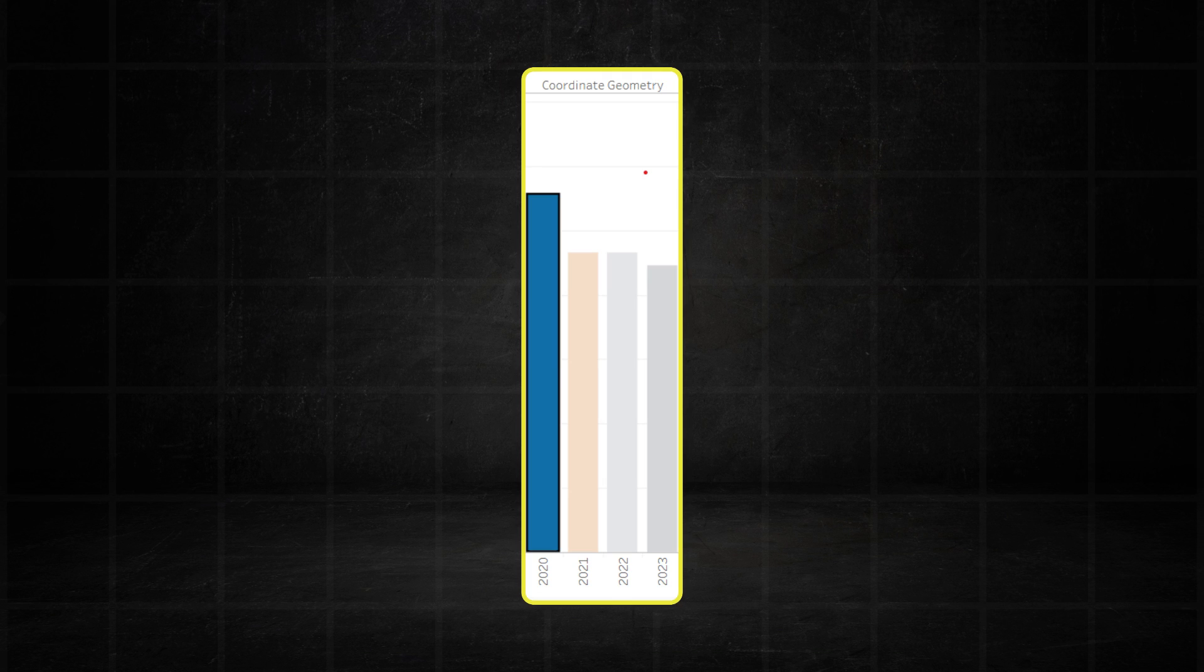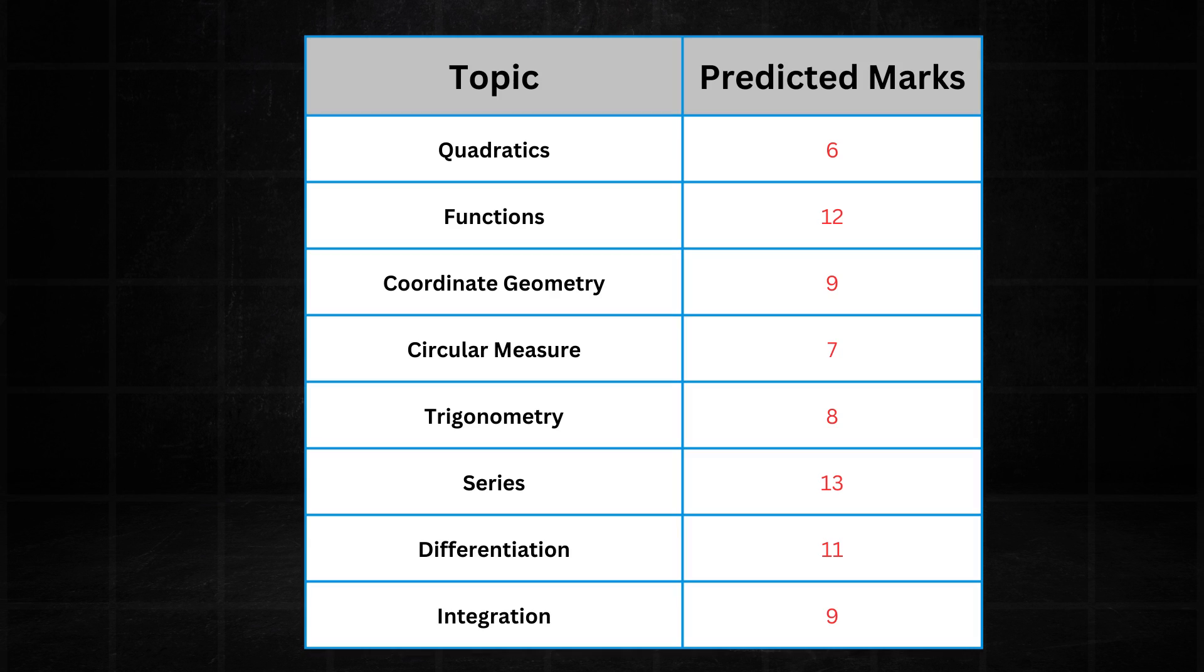Finally coordinate geometry which had a stellar 2020 but since then it hasn't had much luck. In February, March it recorded only 5 marks. I do expect it to do a lot better than this in May, June. I expect it to be around 9 marks per paper.